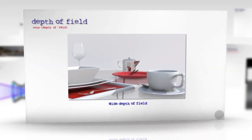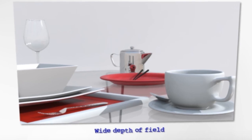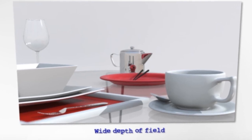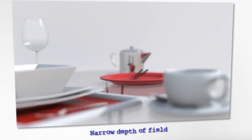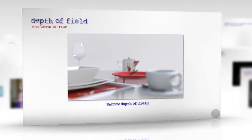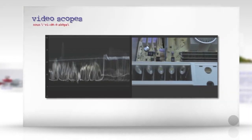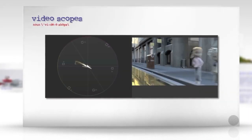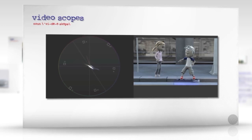Depth of field refers to the region of an image that appears in focus. The wider the aperture of the lens, the narrower the depth of field. Video scopes are monitors used to diagnose the color and luminance values in an image.